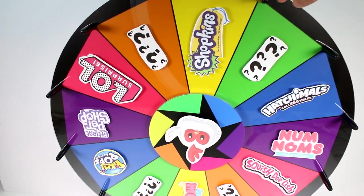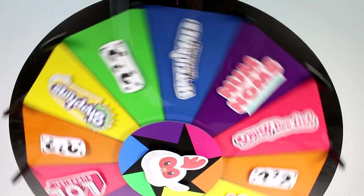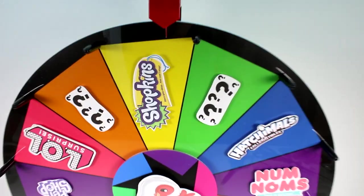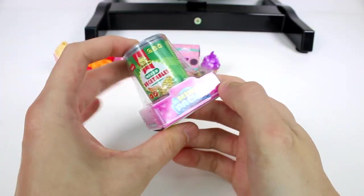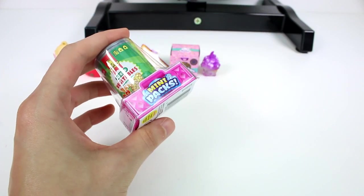Now it is time for our very last spin. Are you guys ready for this? Let's do it. Here we go. It's going to be another Shopkins. Another Shopkin you guys. It is a mixed vegetables can. I'm pretty excited. I love the mixed vegetables ones.